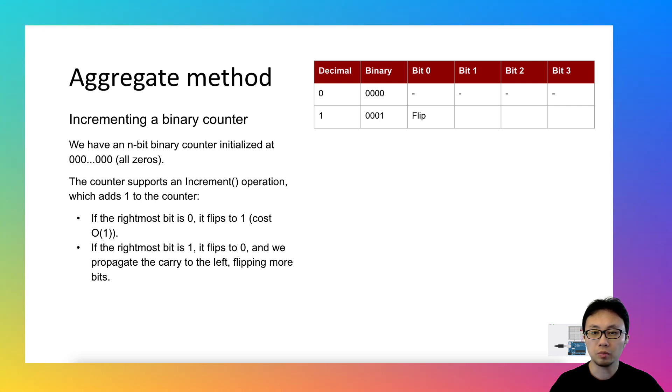it will flip the rightmost bit, and the carry of 1 will be propagated to the second rightmost bit, and that will lead to row 3. If the increment operation is run continuously, it will eventually have all the rows that are presented here.